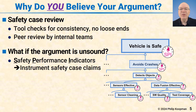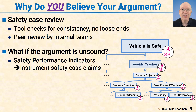One way to do this is to take the safety case and instrument the claims with safety performance indicators. For example, in this picture, we have an argument that a vehicle is safe because it avoids crashes, and that's in part because it detects objects, and that's in part because the sensors are effective, and that's in part because the sensors are kept clean.